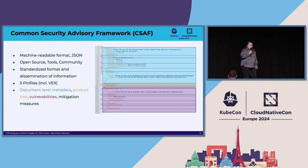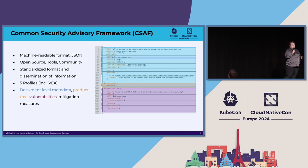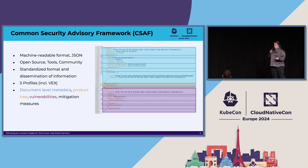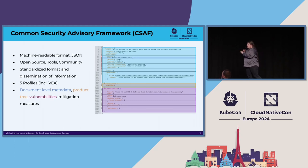CSAF was the first standard that included VEX information. CSAF has in total five profiles — one of them is the informational advisory, for things like wiring issues that have nothing to do with security. There are security advisories, and there is also the VEX information that Jose just talked about. So basically, it's a jack-of-all-trades.